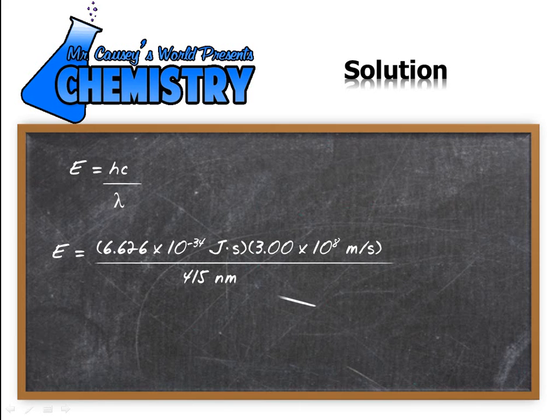But notice that's nanometers, and there are a billion nanometers in one meter. We need to make this into meters. Note right there that we have meters, and a joule is also dealing with meters, so we need to be sure and adjust that.